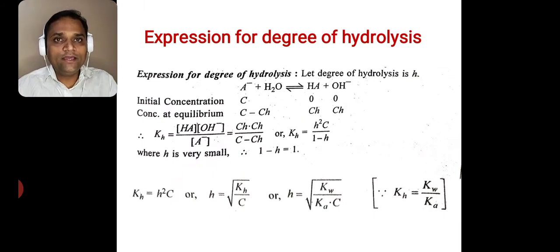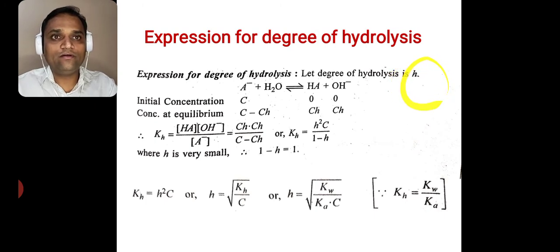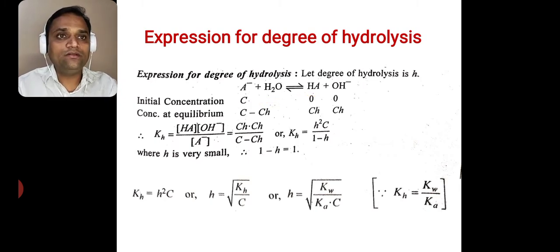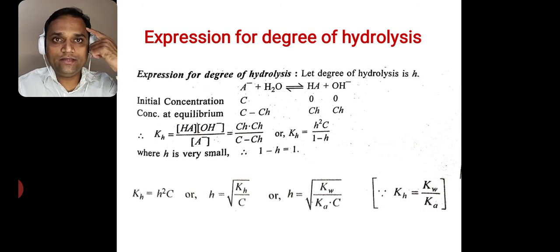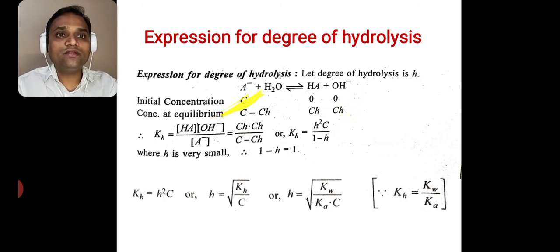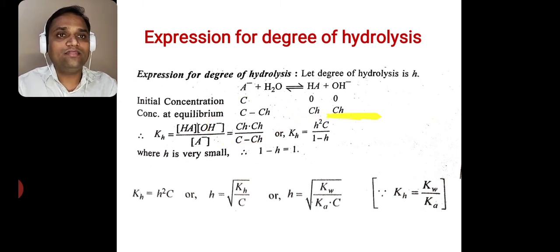Now we derive the expression for the degree of hydrolysis h. For the reaction A⁻ + H₂O → HA + OH⁻, the initial concentration of A⁻ is C, and concentrations of HA and OH⁻ are zero. At equilibrium, [HA] = Ch, [OH⁻] = Ch, and [A⁻] = C − Ch.